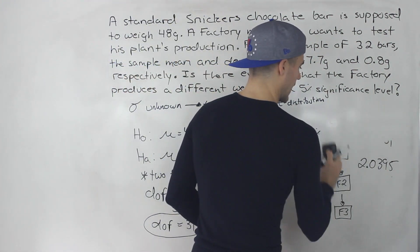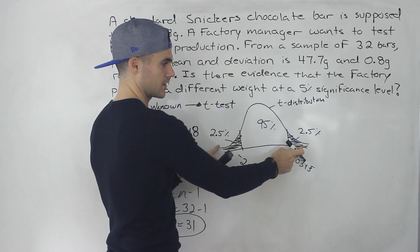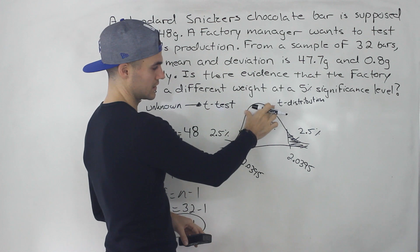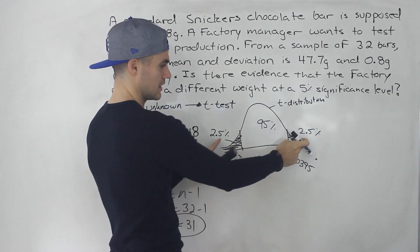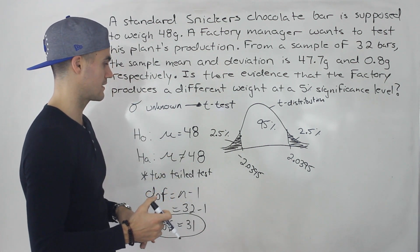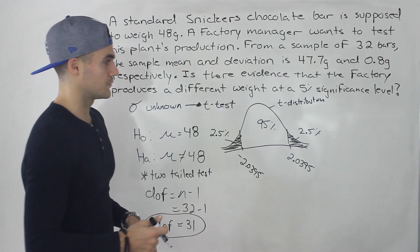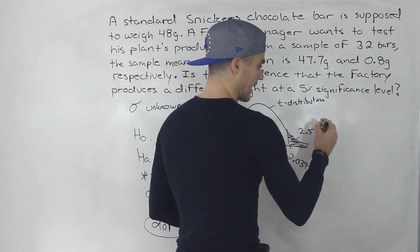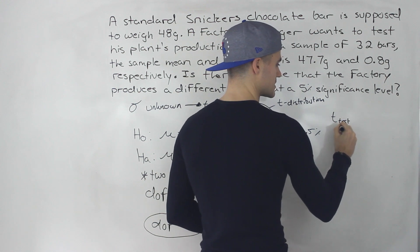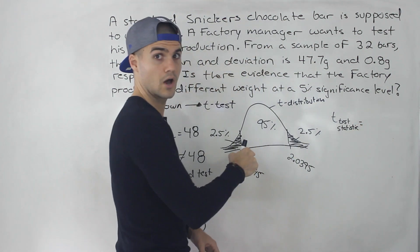Now we have our critical values. We have two rejection regions and a non-rejection region in the middle. In the non-rejection region we continue to accept the null or fail to reject it. In the rejection regions we reject the null hypothesis — meaning there is a difference in the weight produced at the factory. Just like the z-test, we now have to calculate a test statistic — in this case a t test statistic, because it goes on the t-distribution.